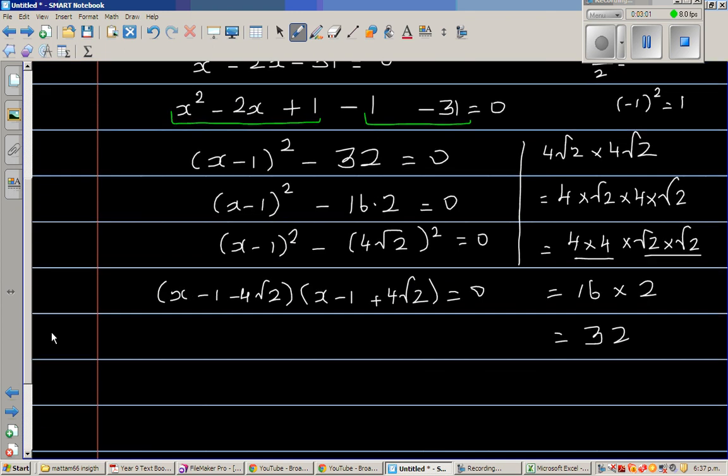So when you set each of them equal to 0, so I can say x minus 1 minus 4 root 2 is equal to 0, or x minus 1 plus 4 root 2 equal to 0. So what is x? x is 1 plus 4 root 2, and here x would be 1 minus 4 root 2.